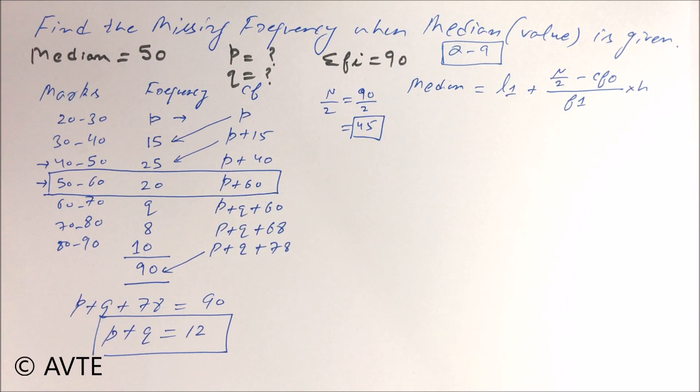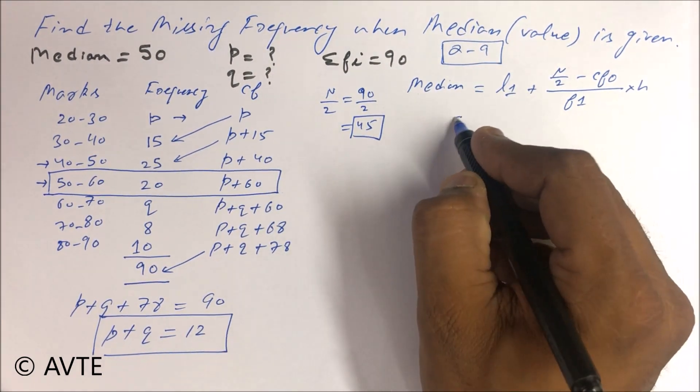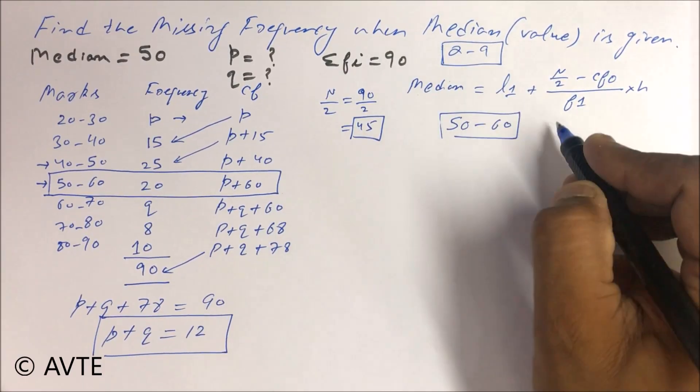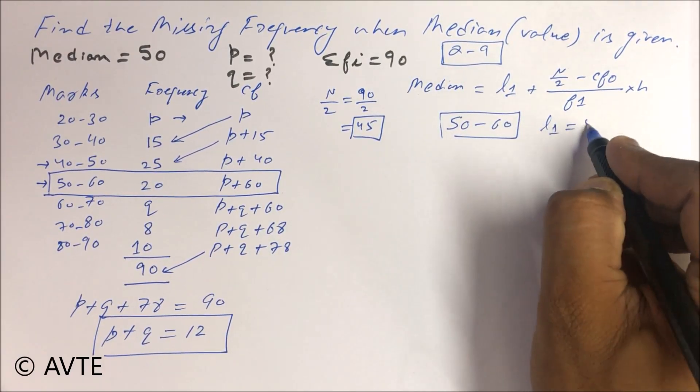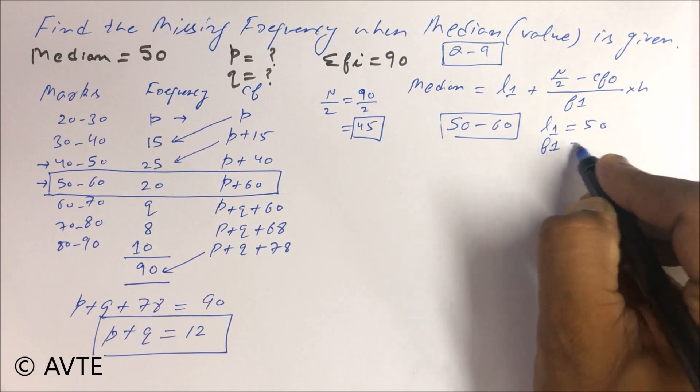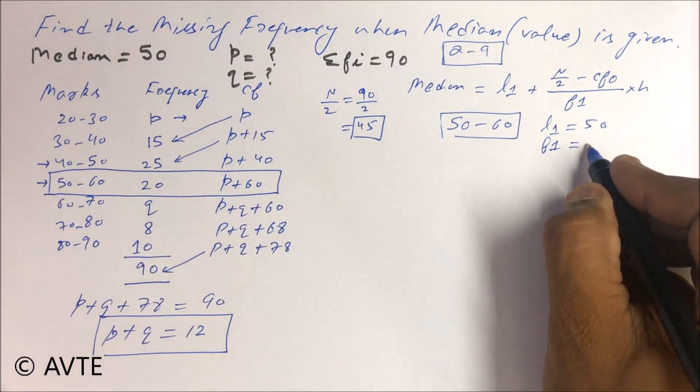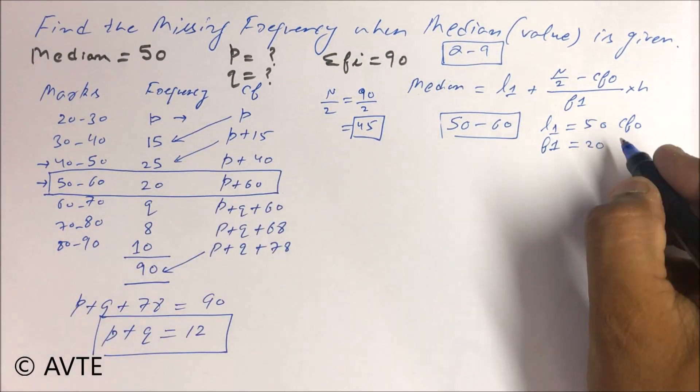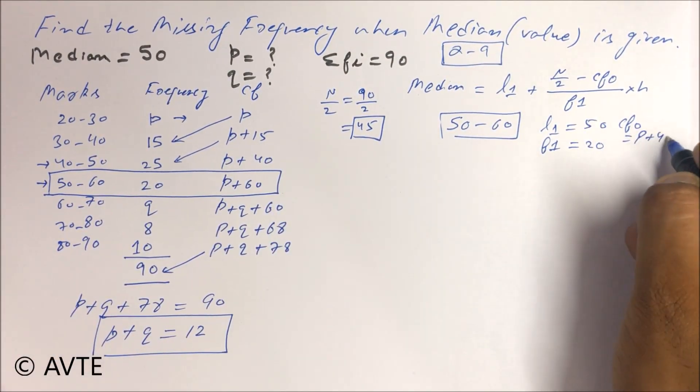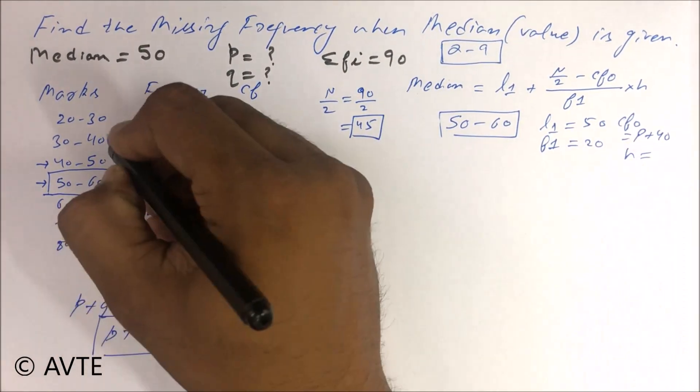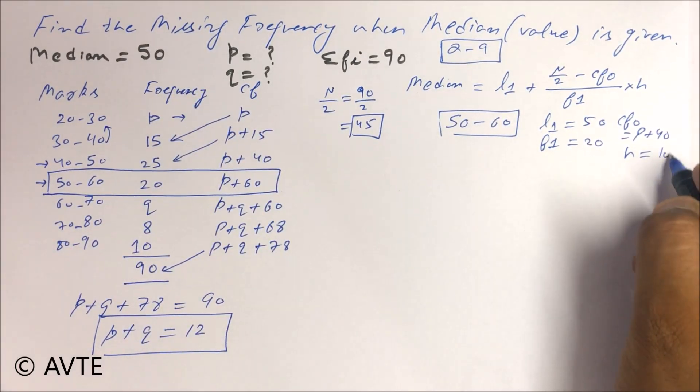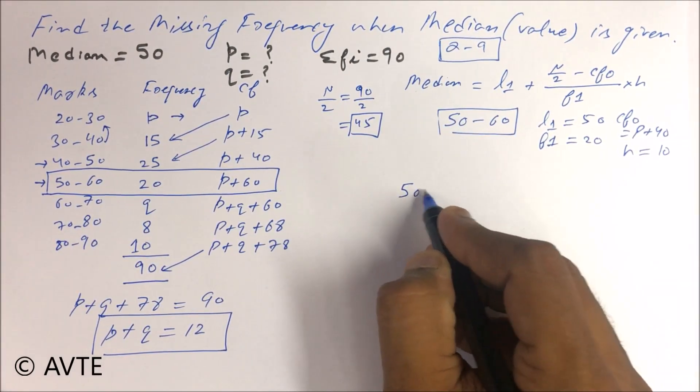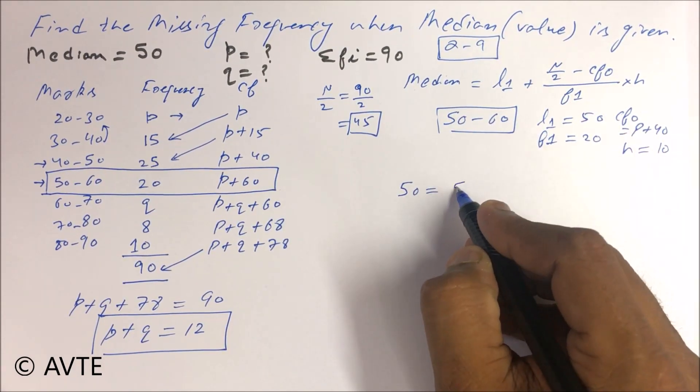This is the exclusive series true class limits. So your median class is 50 to 60 where your L1 is 50, your F1 is 20, your CF0 is P plus 40 and your H is 10 and your median is 50.